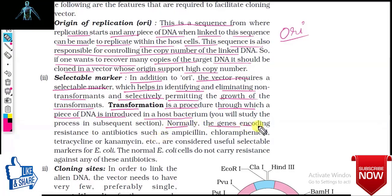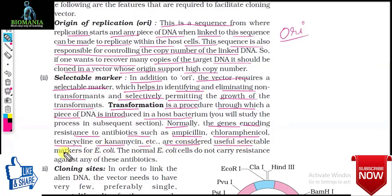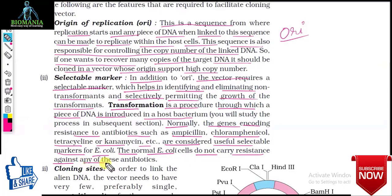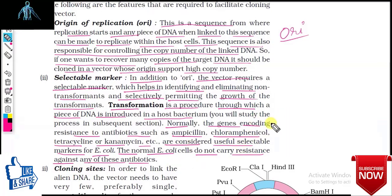The genes encoding resistance to antibiotics such as ampicillin, chloramphenicol, tetracycline, and kanamycin are considered useful selectable markers for E. coli. Normal E. coli cells do not carry resistance against any of these antibiotics. If there is a transformant E. coli cell, we will introduce these genes.